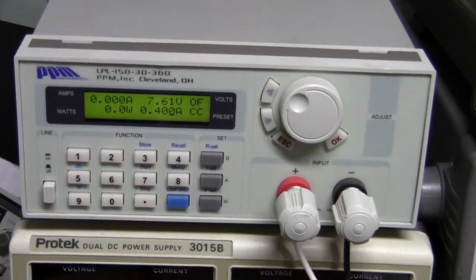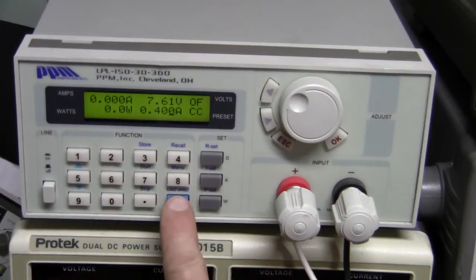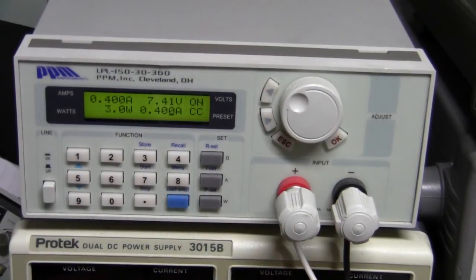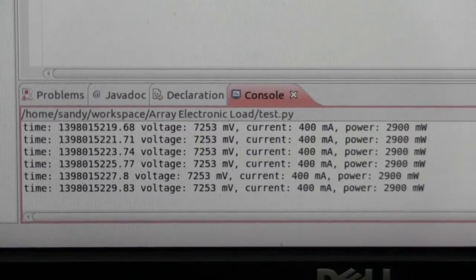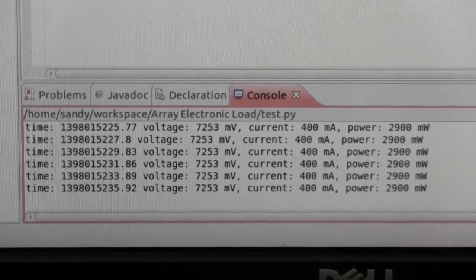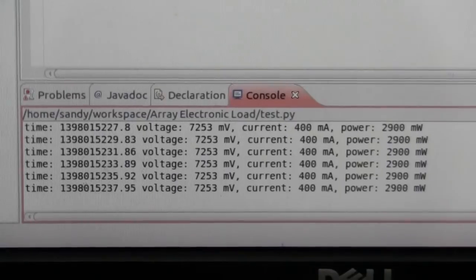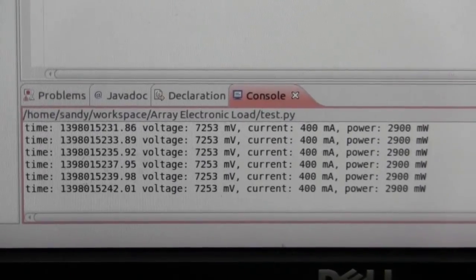Let me start the data logging. Alright, data logging started, let's turn it on. Here is data logging going on. It's been just a couple minutes or so, and the voltage is already down to 7.2. Let's check later.